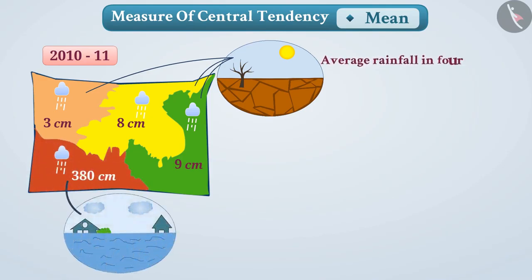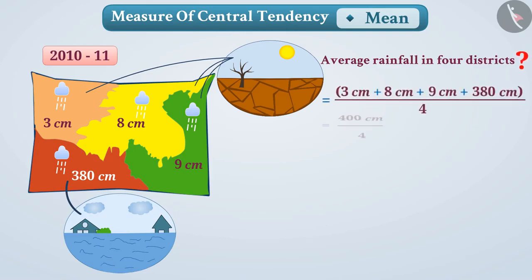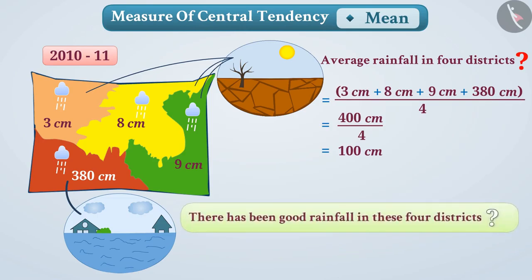If we find the average rainfall in four districts, it will be 100 cm. Looking at this, would it be correct to say that there has been good rainfall in four districts? No, it would be wrong to say.